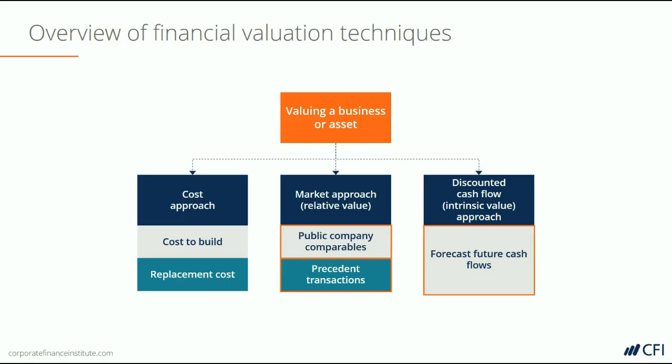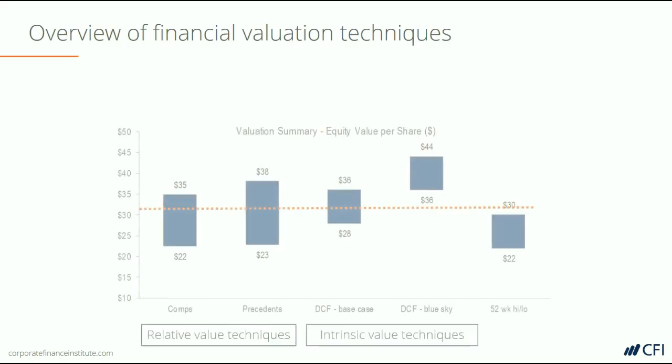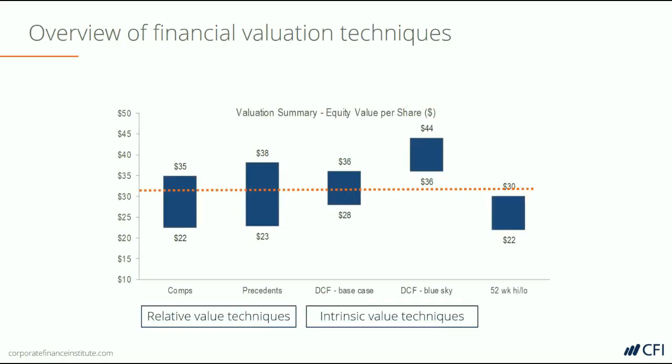Here's a football field chart. This is often created by investment banking, corporate development, and equity research professionals when summarizing the valuation methods they've used to come up with a value for a business. Across the bottom axis of this chart there are several different valuation methods: comparable company analysis, precedent transactions, discounted cash flow with two different cases, and the current trading price of the stock with its 52-week high and low. The two methods on the left are labeled as relative valuation techniques.